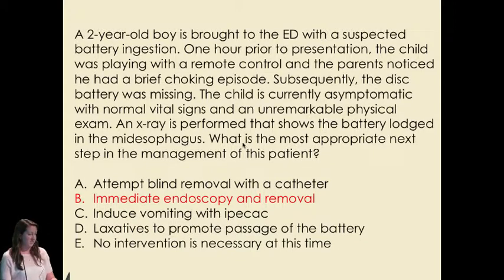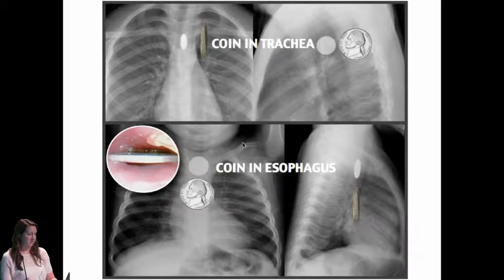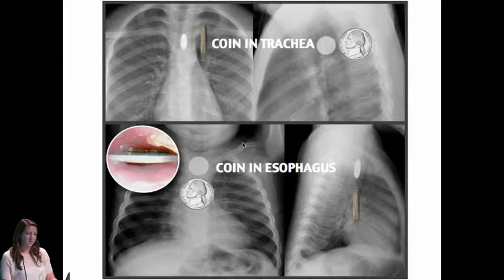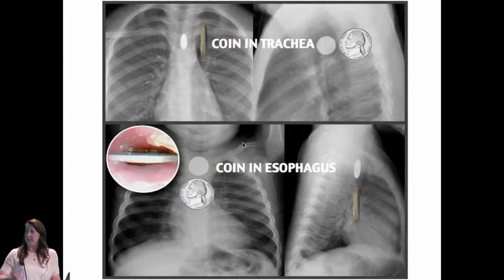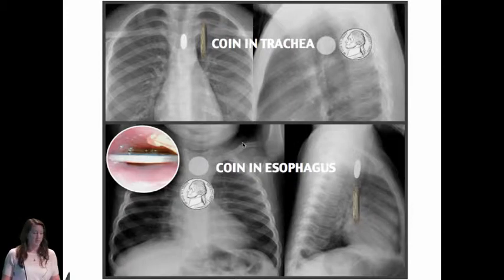How you know whether the coin is in the trachea versus the esophagus is important — you'll get a chest x-ray and need to know where it is. A coin in the esophagus will show the full AP face of the coin, whereas in the trachea it's the opposite — you see the edge-on view. That's always something important to think about when looking at these chest x-rays.